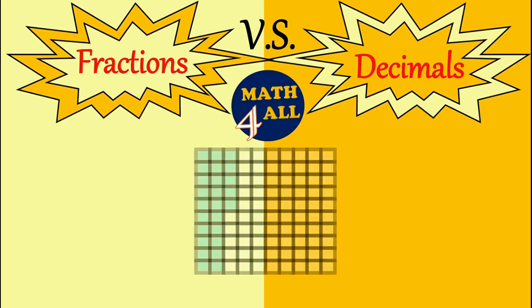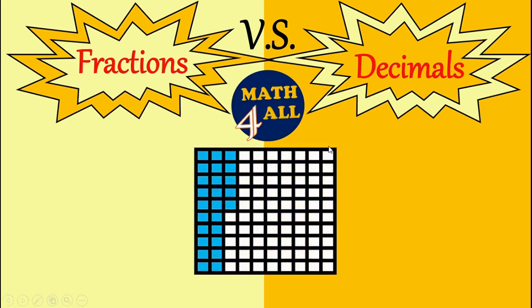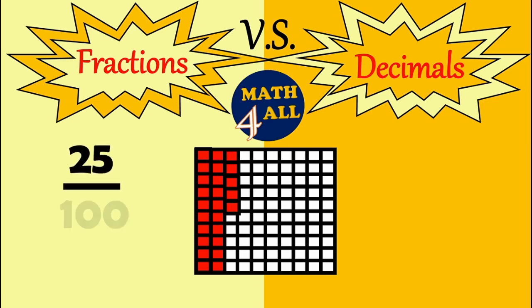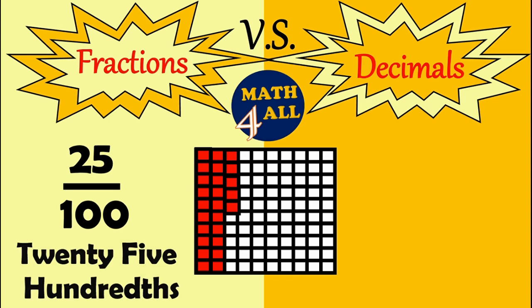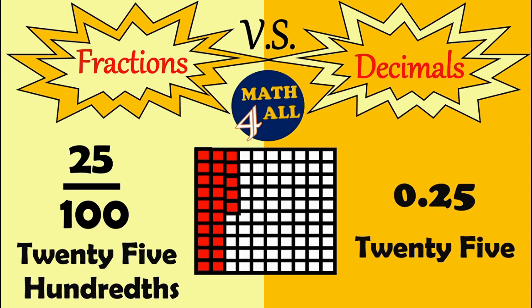Next, here we have again one square broken into 100 parts. Let's count how many parts we have: 10, 20, 21, 22, 23, 24, and 25. So we will write the fraction as 25 over 100, and you can read it as 25 hundredths. On the other hand, you will write 0.25 and we will read it as 25 hundredths. And this was our lesson — thank you!